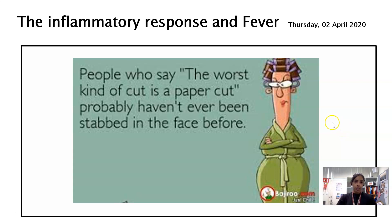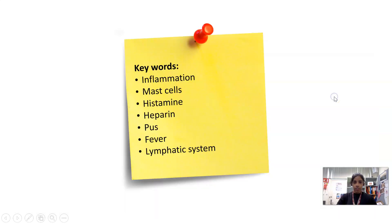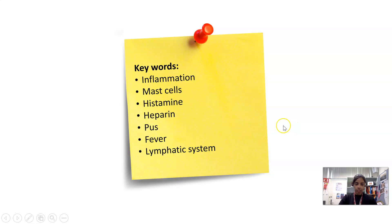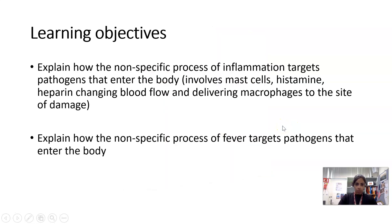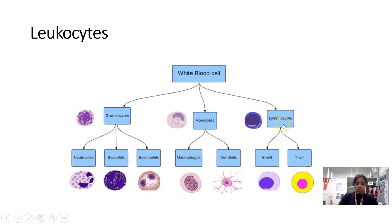Hi everyone, in this lesson we are going to look at the inflammatory response and then we're going to look at fever. Your key terms are inflammation, mast cells, histamine, heparin, pus, fever, and the lymphatic system. Those are your learning objectives for this lesson and we're also going to touch on leukocytes.